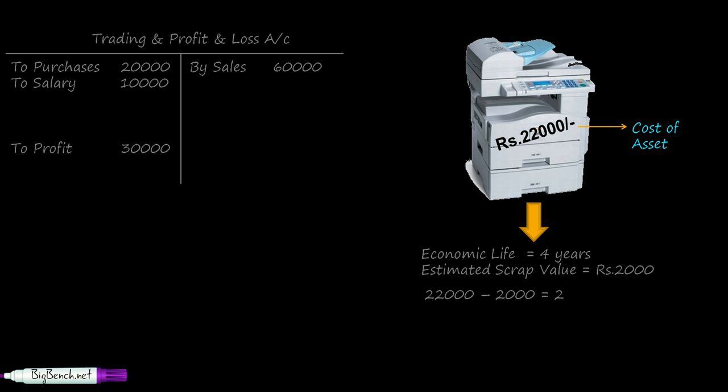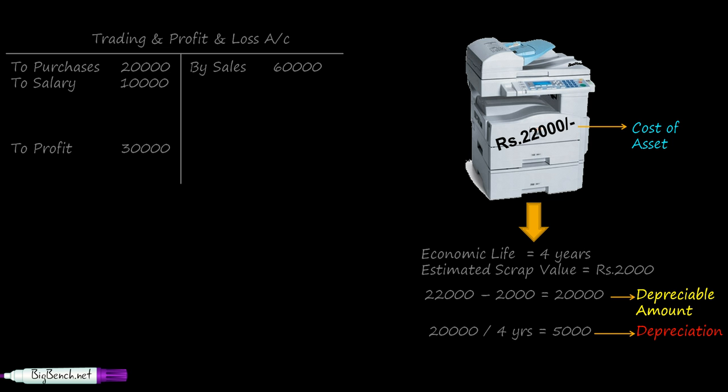Now, 22,000 minus 2,000 equals 20,000. The 22,000 is a cash outflow since he is buying the asset, and the 2,000 will be a cash inflow at the end of the fourth year. So his net cost is 20,000. This net cost is better known as the depreciable amount, meaning we depreciate 20,000 over four years, not 22,000. We write off only 20,000 over four years — this is the depreciable amount. Dividing 20,000 by 4 gives 5,000, which is the annual depreciation.